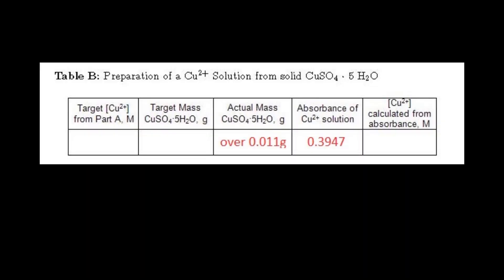To clarify Part B, when we went to measure our actual mass of copper sulfate pentahydrate, we went over by 0.011 grams. Our absorbance for this sample was 0.3947.